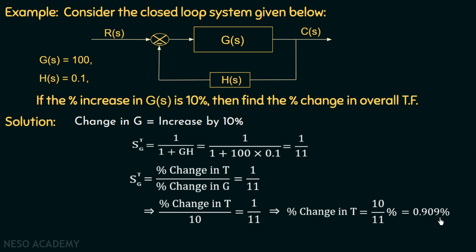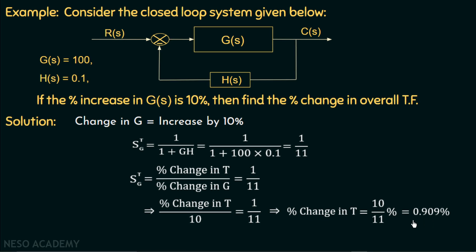From this example we can see that if the change in the forward path parameter is 10%, which is a very high value, the overall change is still less than 1%. This is one of the advantages of using negative feedback. Moreover, we took the percentage change in G(s) as positive because it was given as an increase. If it were a decrease in G(s), we would have taken this quantity as negative.